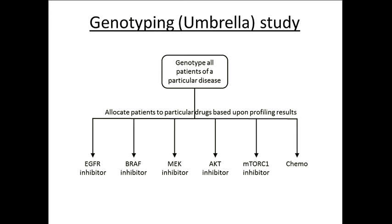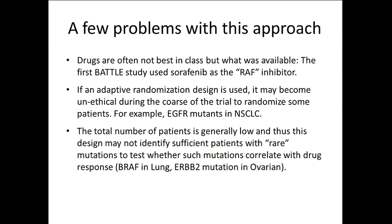You can either straight up allocate patients based upon mutation, or do what's called an adaptive randomization, where initially you randomize patients to different arms, and if you start seeing greater activity in one arm, more patients get randomized there. That allows you to determine that not having the biomarker doesn't work. The first really good example of this was the BATTLE study run out of MD Anderson by Roy Herbst. And really there are three main problems with the approach.